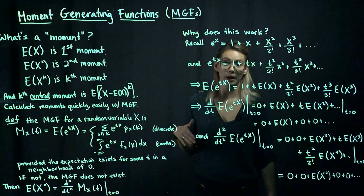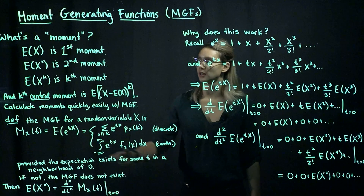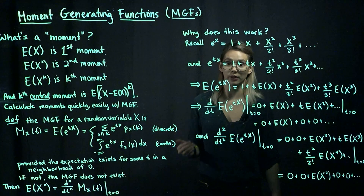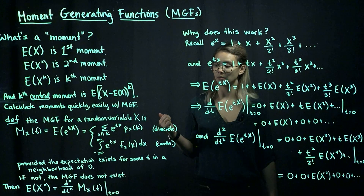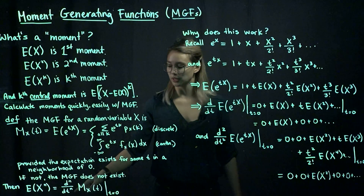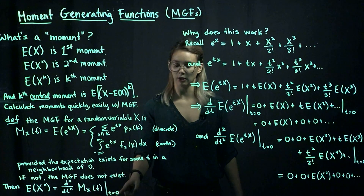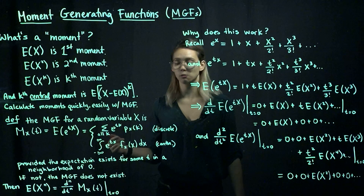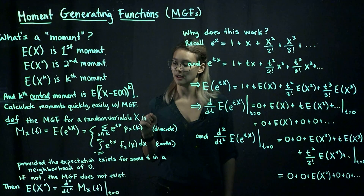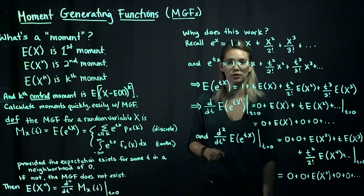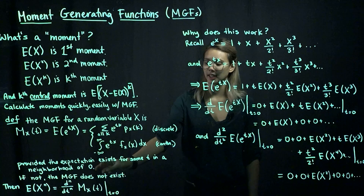Now we need to think about how we actually use the MGF to generate our moments. What we're going to do is take our MGF and then take derivatives. If we want the nth moment of x, we take n derivatives with respect to t, and then evaluate at t equals zero. So if we want the first moment, we take our MGF, take one derivative with respect to t, and then evaluate it at t equals zero.